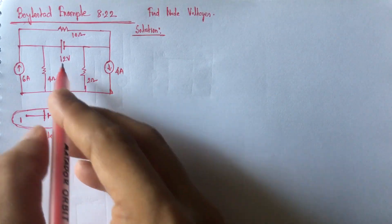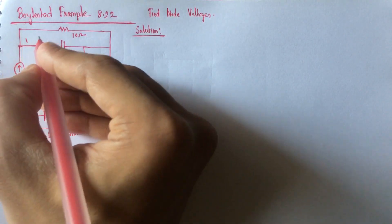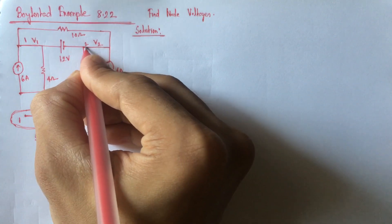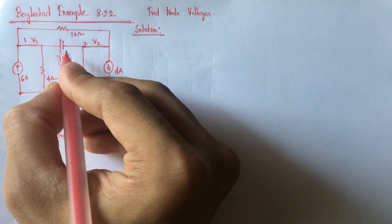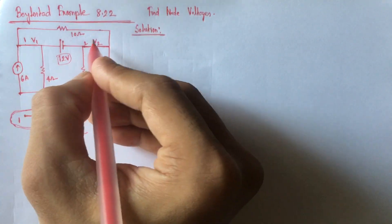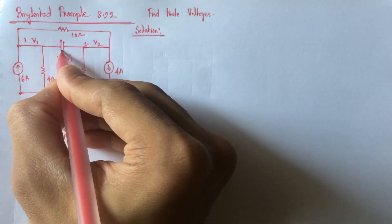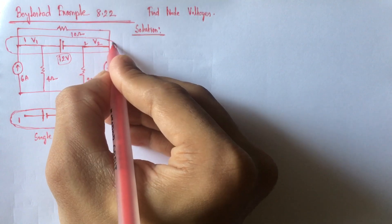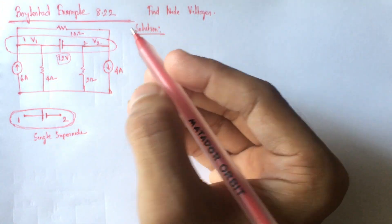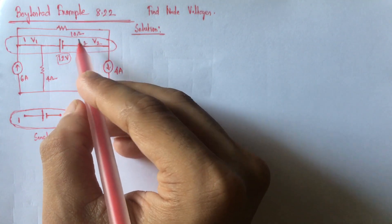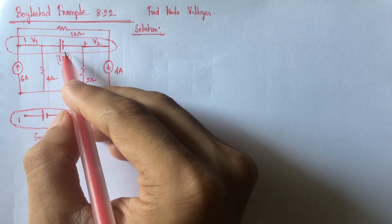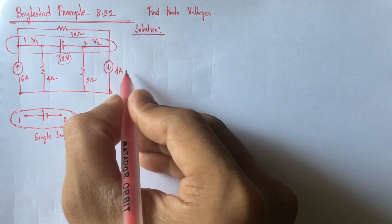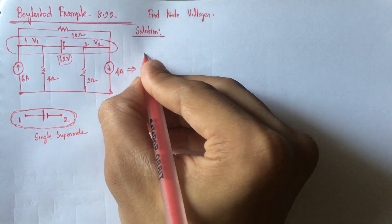From the circuit, if we let this be node 1 with voltage V1 and this be node 2 with voltage V2, we see that the 12 volt source is in between node 1 and node 2. So, this is a super node which will act as a single node. For solving the problem, we can mentally replace the voltage source by a short circuit equivalent and redraw the circuit.